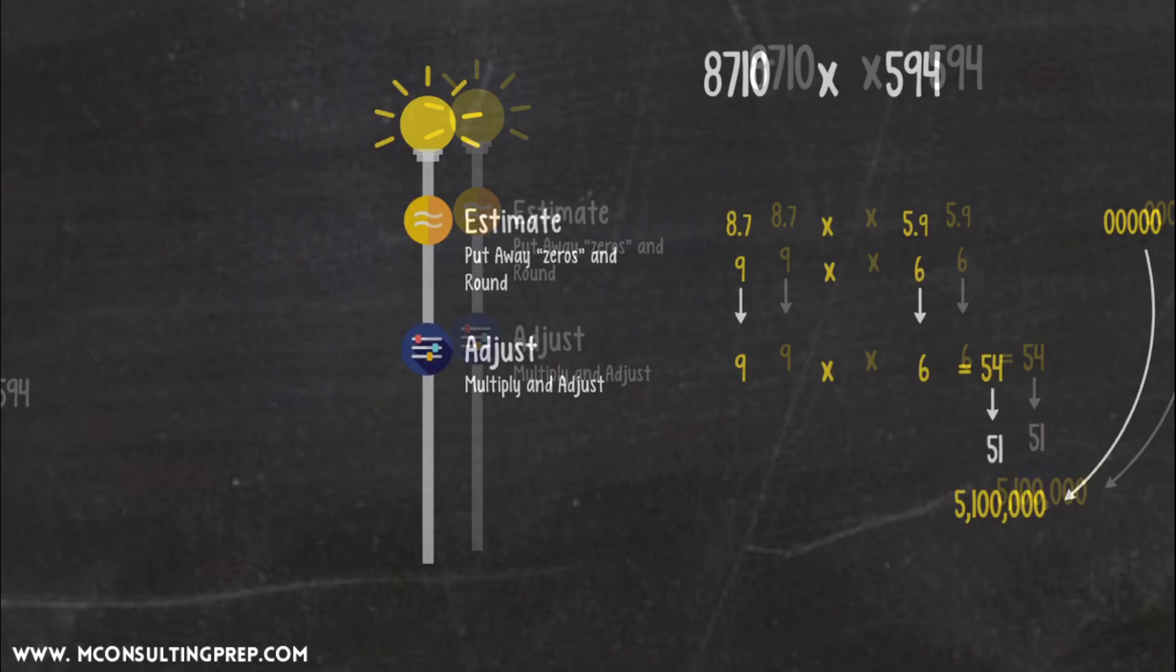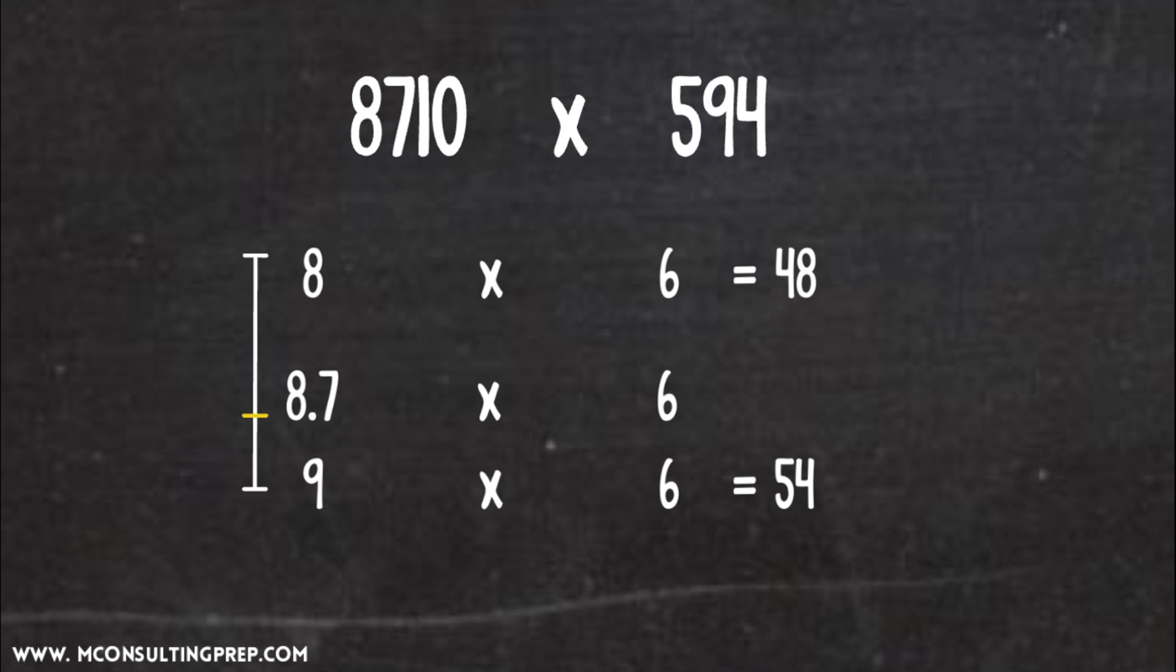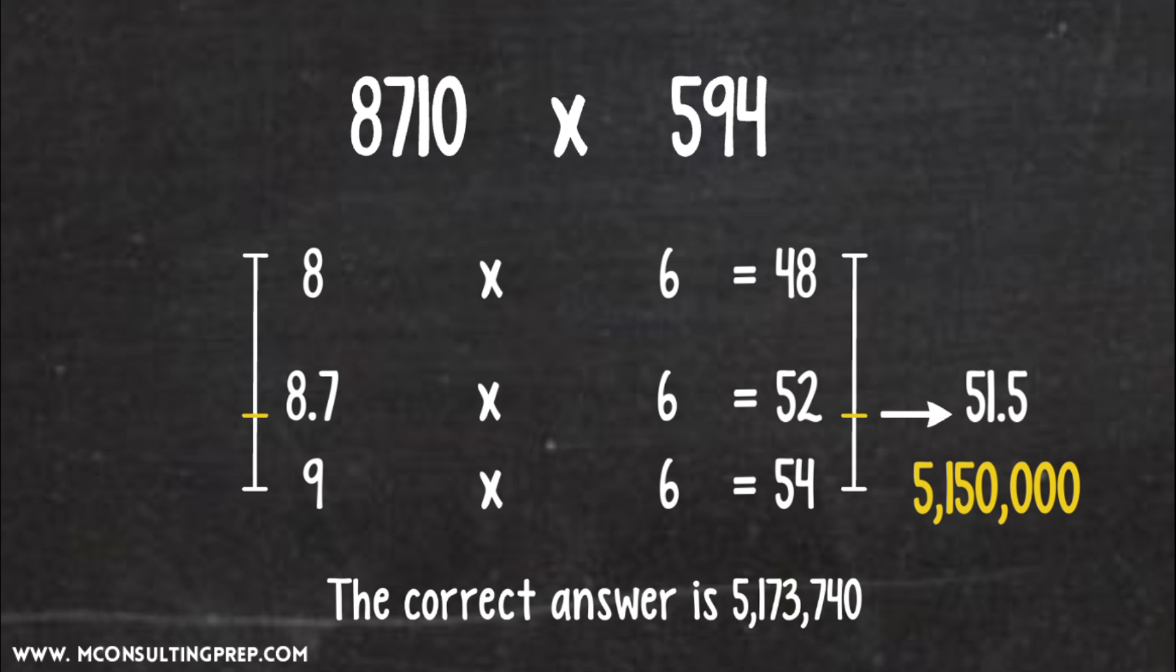A more precise version? From the 8.7 we have, examine two ends of the possible rounding. 8 times 6 is 48, and 9 times 6 is 54. So, 8.7 times 6 is somewhere in between, but closer to 54, of course. Even more precisely, 8.7 is 2 thirds away from 8 to 9. So, the final answer is somewhere 2 thirds away from 48 to 54 as well. 52 seems to be a good estimation. And adjust a little bit down for the 5.9 instead of 6. 51.5 seems right. Putting the zeros in, we have 5,150,000. And the correct answer is actually 5,173,740. See? It isn't difficult at all, is it?